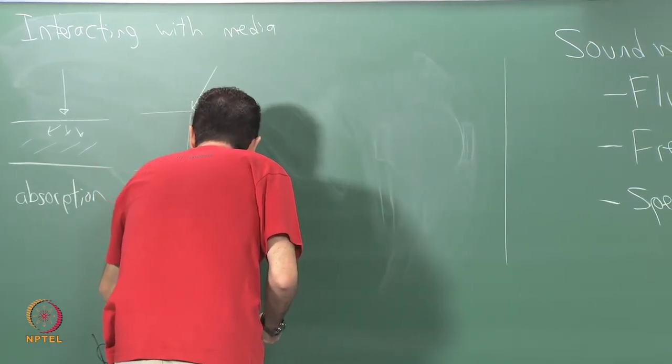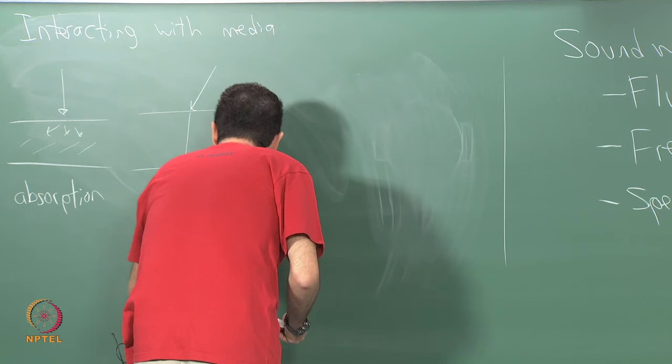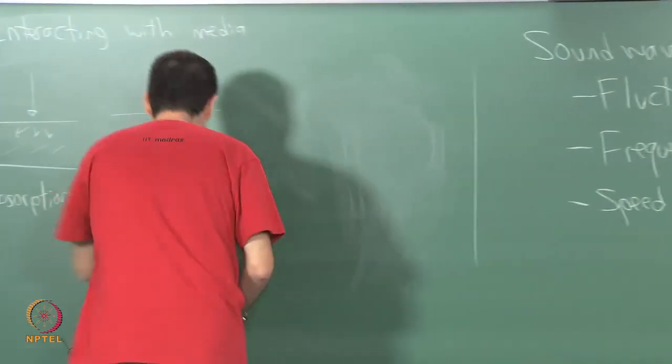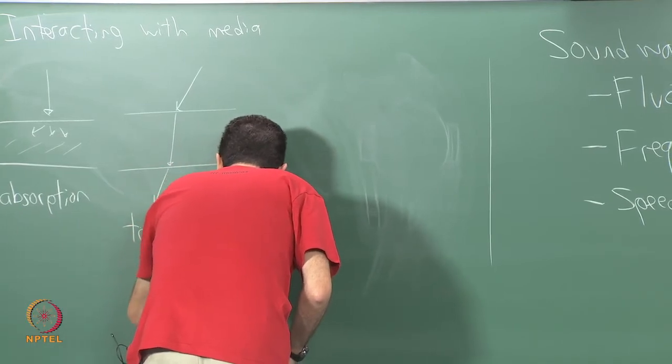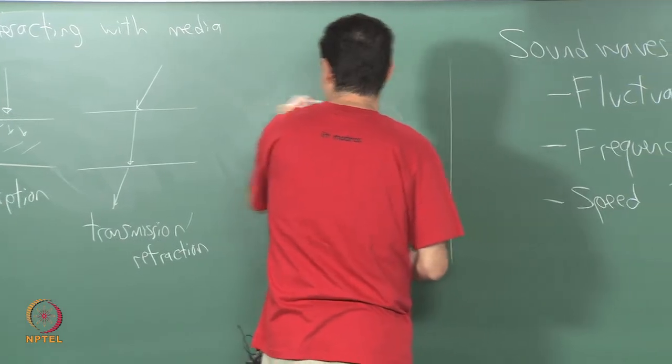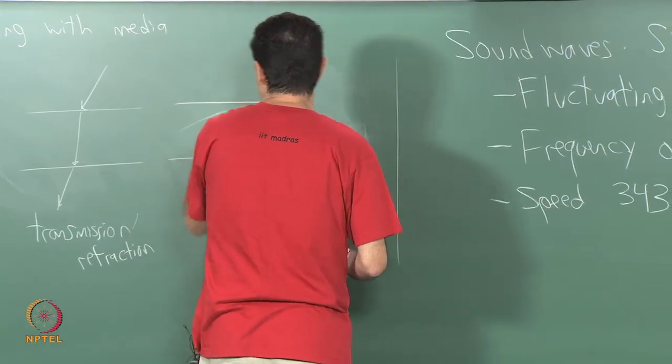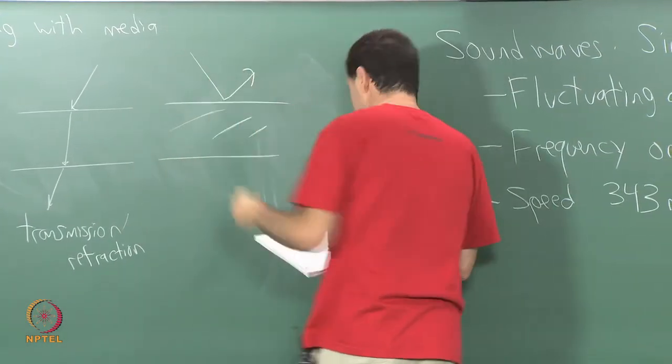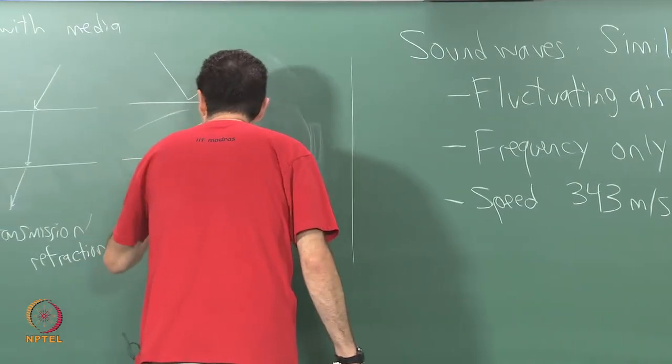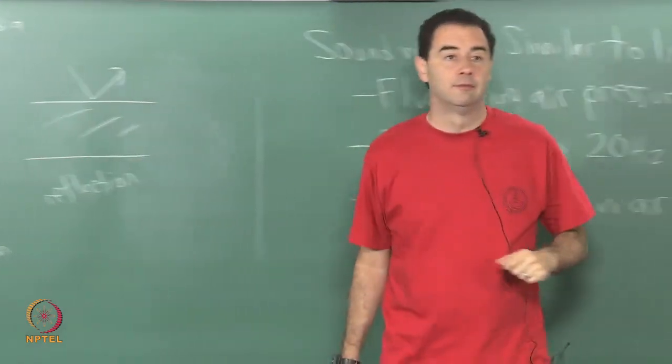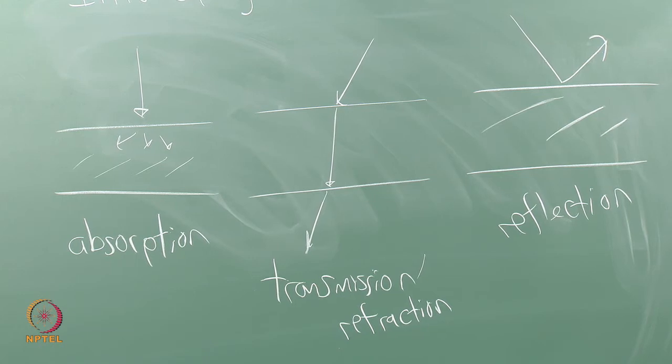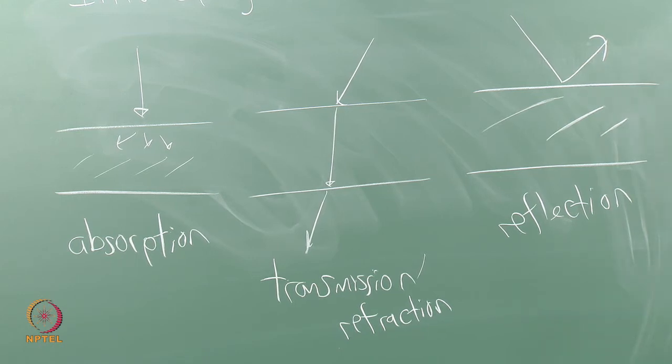We also get some transmission. It is very natural, we can hear sound through walls. Some refraction of waves occurs in that case as well. And of course, we get reflection of sound waves. So, we can hear an echo back as sound waves are bouncing off of buildings for example.